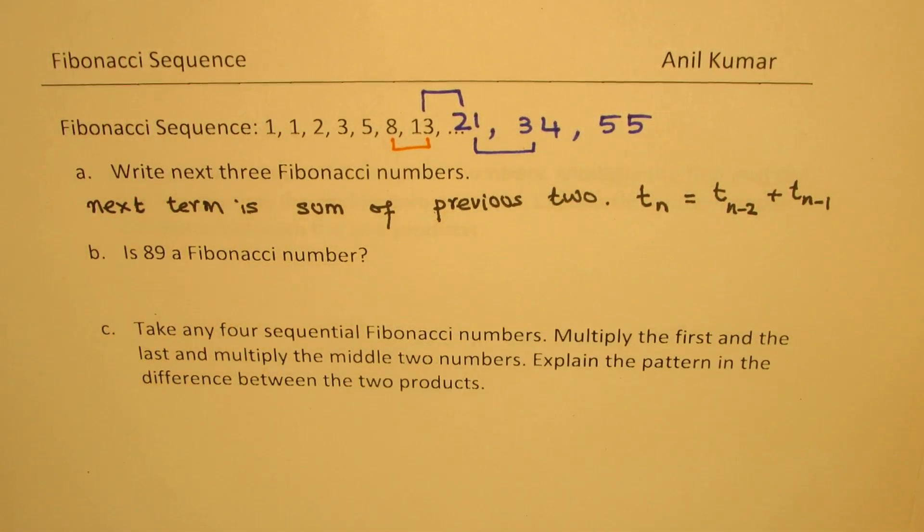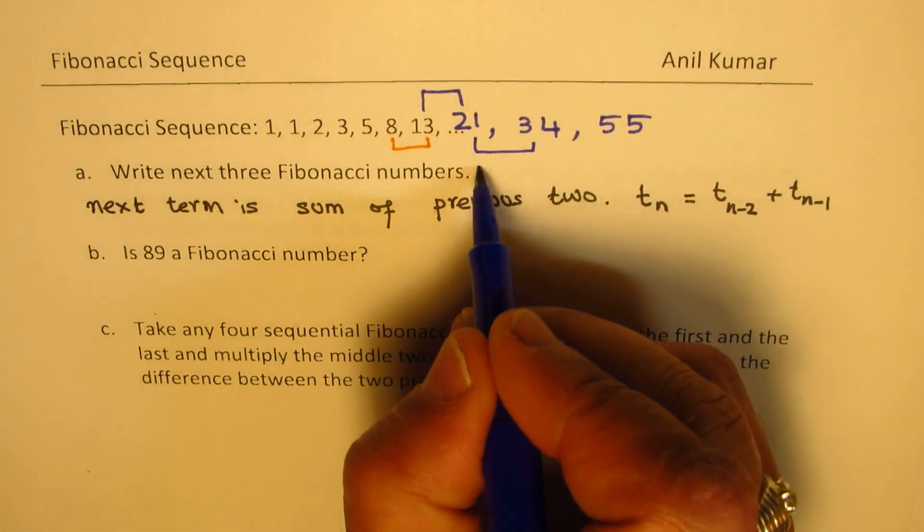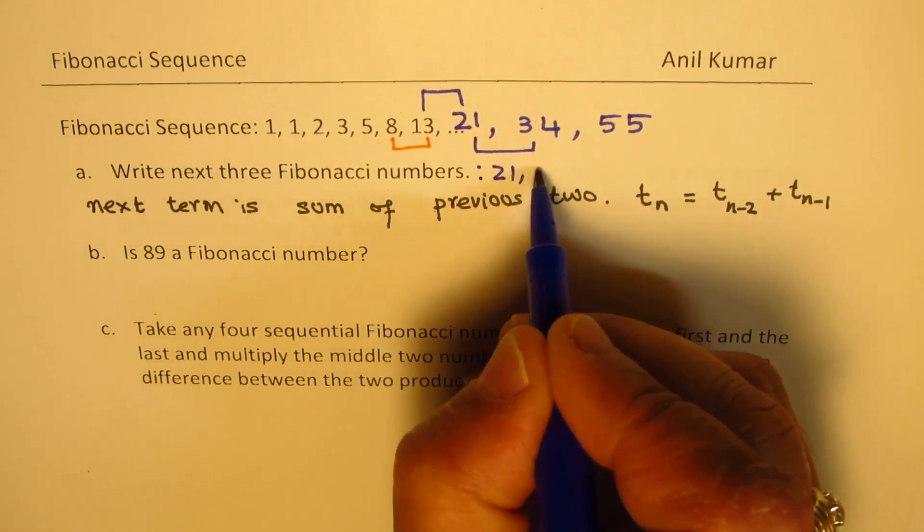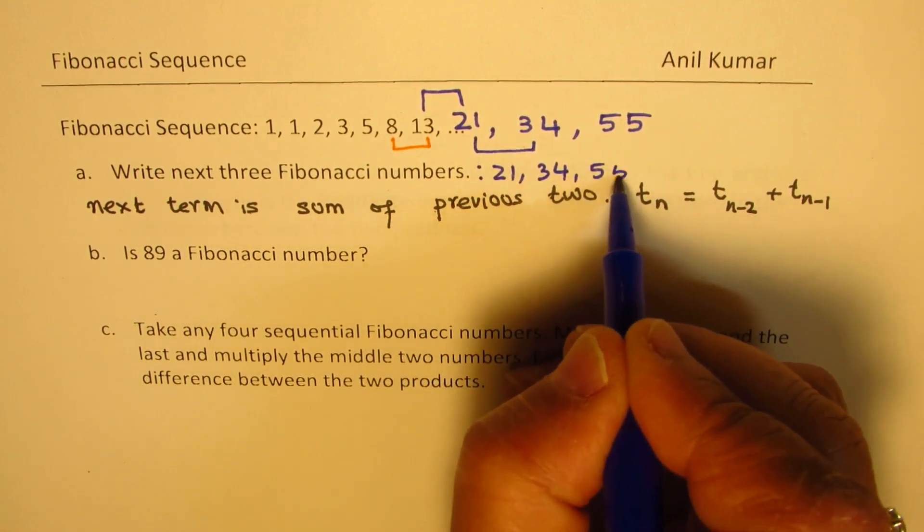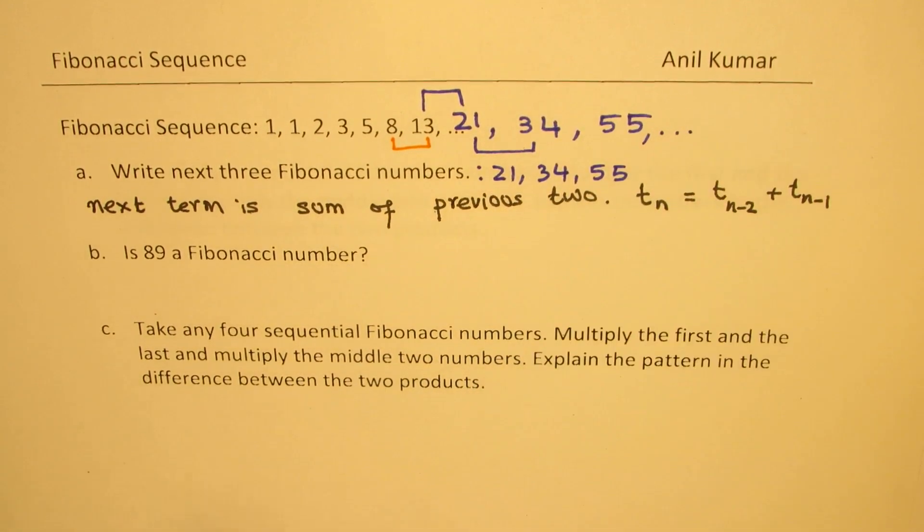So the next three terms are 21, 34, and 55. You can write this answer. Like this, the series will continue.